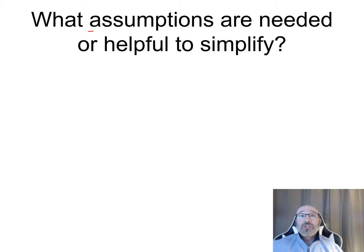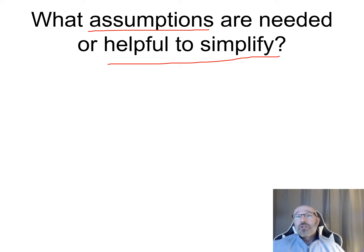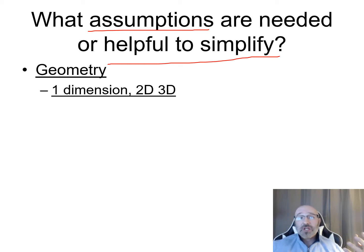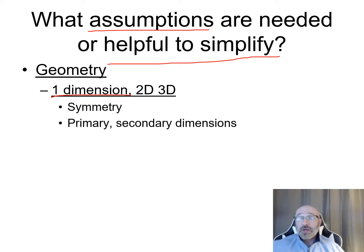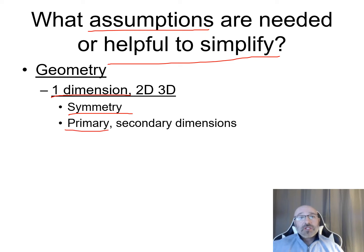Now we talk about what assumptions we can make to help simplify the solution. From the problem statement and initial diagram, we look at geometry: are we dealing with 1D, 2D, or 3D? In 1D, governing equations simplify significantly. Is it symmetric or asymmetric? If symmetric, we can look at just a portion. Are we looking at a primary driving dimension that causes others to change? These geometric assumptions become important.